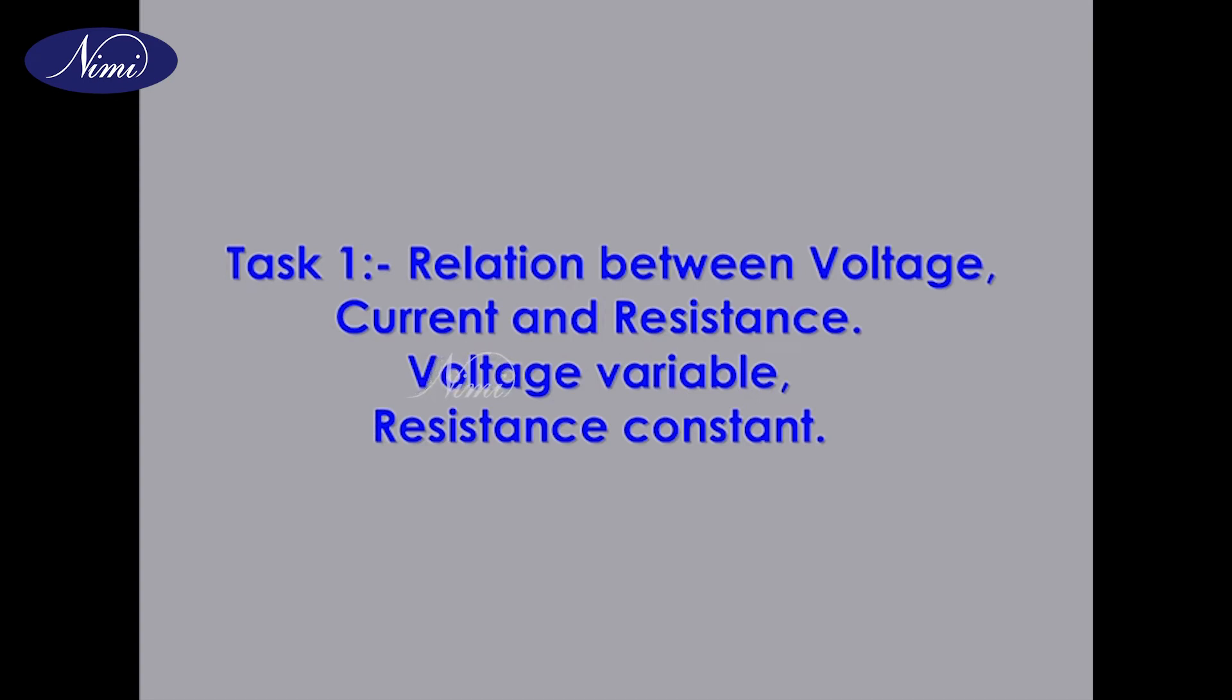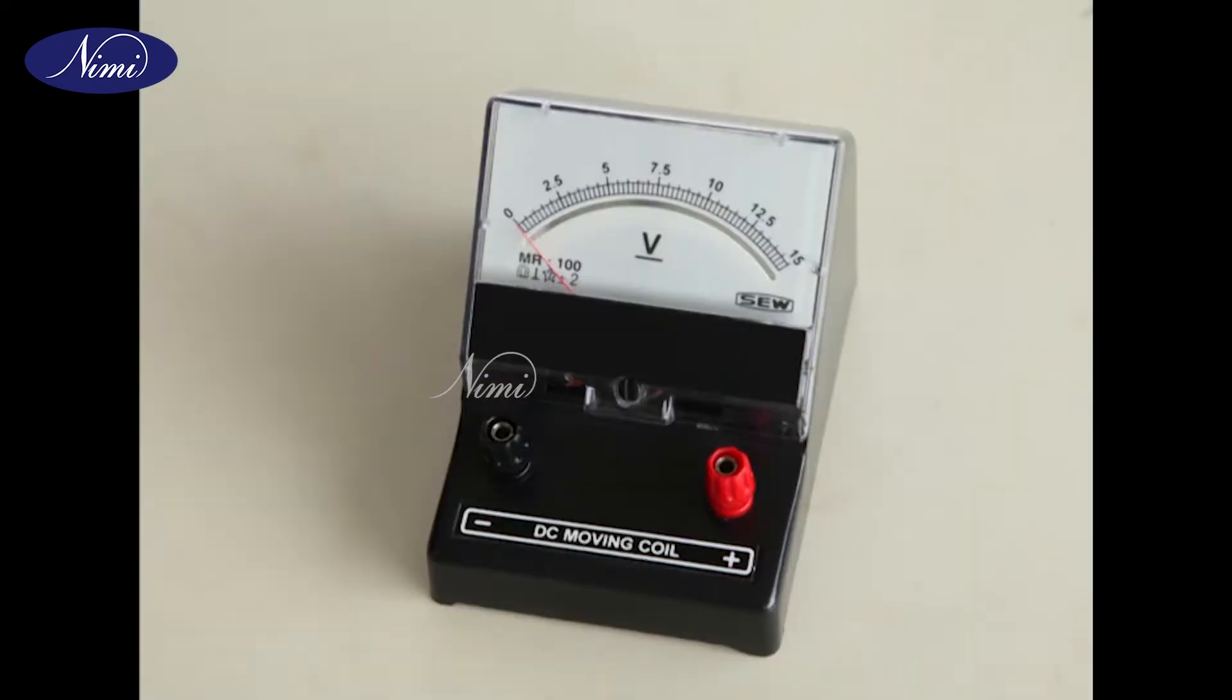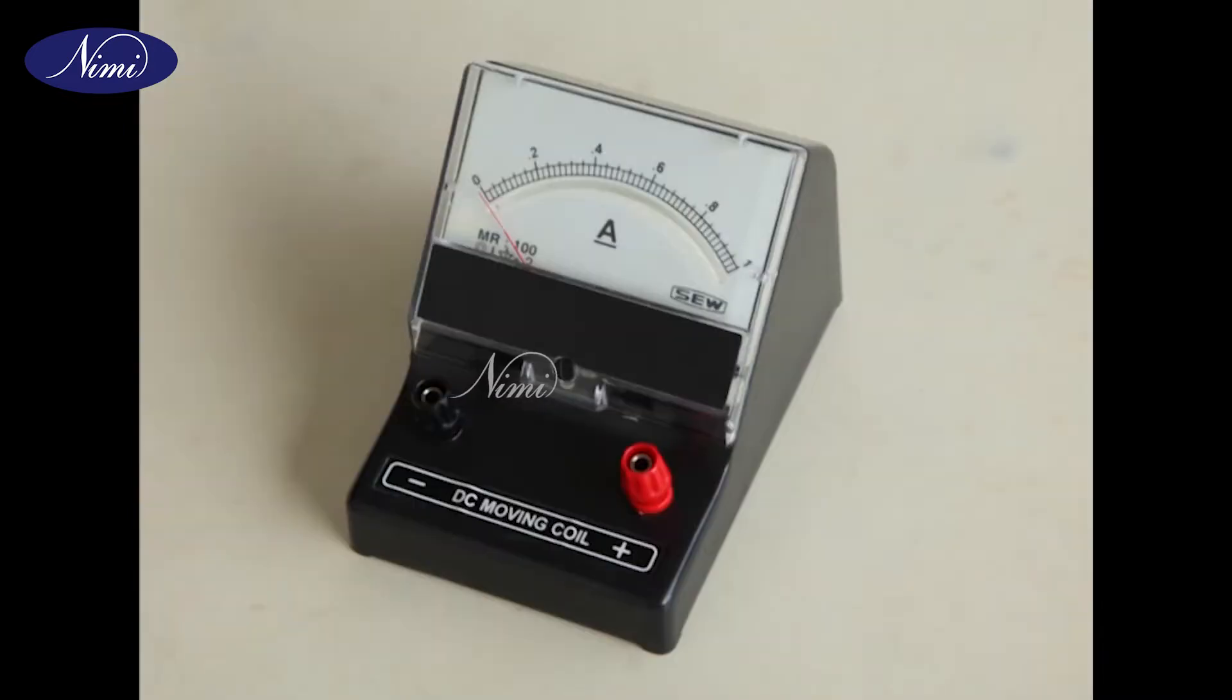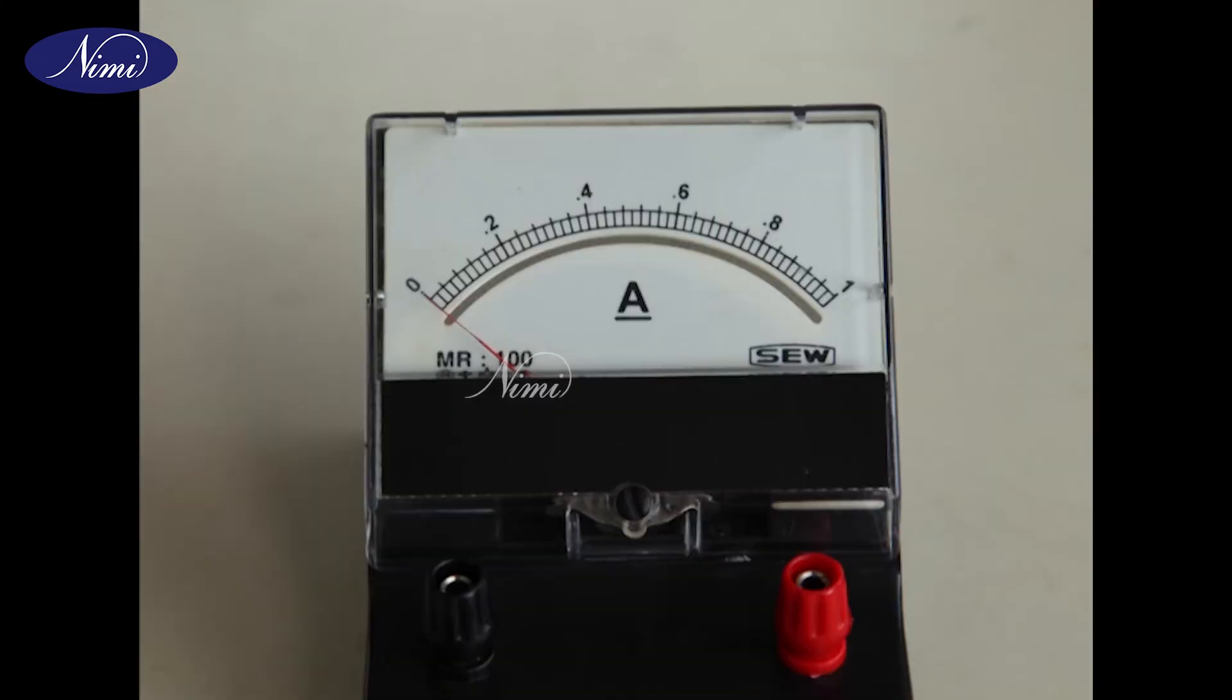Step 1: Identify the voltmeter from the dial marking V. Step 2: Identify the ammeter from the dial marking A.